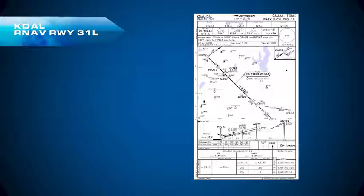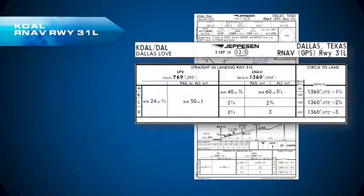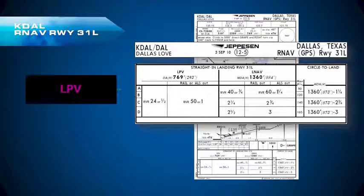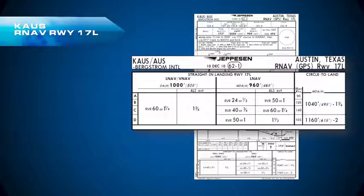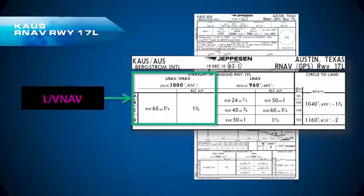To take an example, let's look at Dallas Love RNAV runway 31 left. Here we're given two sets of minimums to work with. If we get the LPV enunciation, we'll use the LPV decision altitude. And if we get the LNAV enunciation, we'll use the LNAV MDA. Some approaches don't have LPVs, and we might get an approach with vertical guidance that's only an LNAV/VNAV — for example, Austin's RNAV runway 17 left — and in that case we might expect to get an L/VNAV enunciation to fly to that decision altitude.